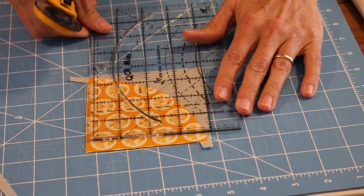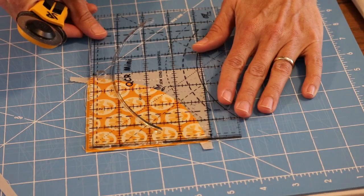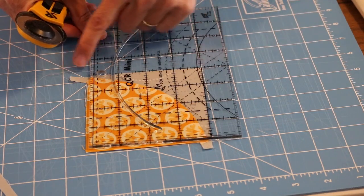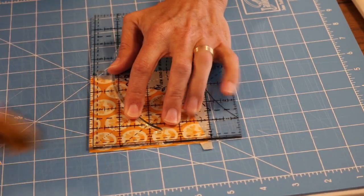Rotate my block, and then I'm going to line up those previously trimmed sides just right underneath my four-inch lines here and here, and trim off my other two sides.